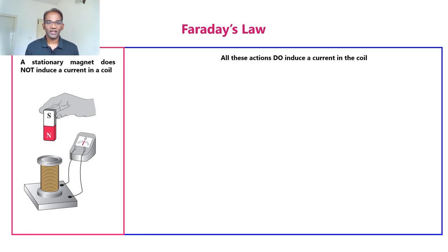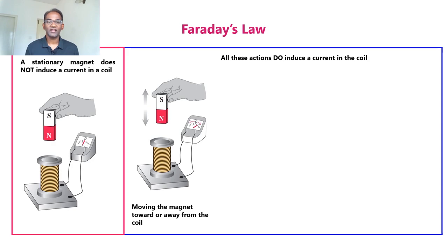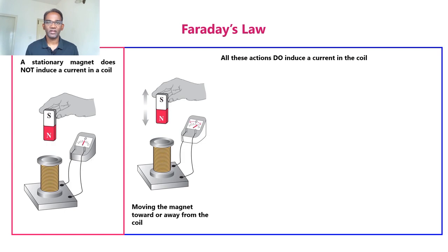Now let us come to the second case. In this case, we will either be inserting the bar magnet inside the coil or taking it out from inside the coil. When we insert or take out the bar magnet from the coil, we can actually see a deflection in the galvanometer. This deflection will be in opposite directions — for example, if we insert the bar magnet into the coil, the deflection will be to the right, and if we take out the bar magnet, the deflection will be to the left.